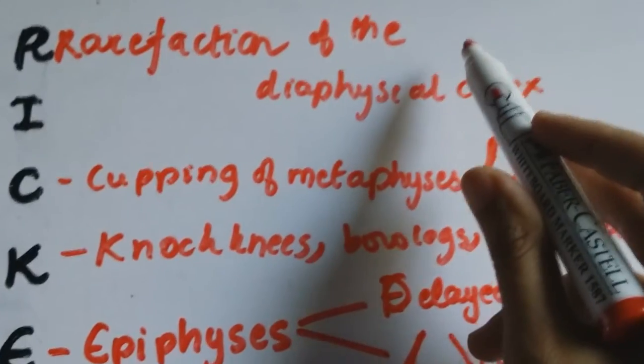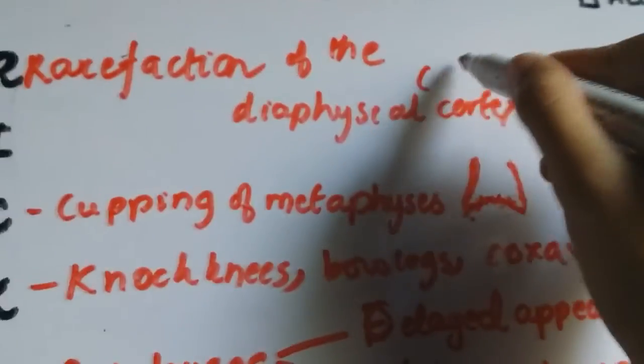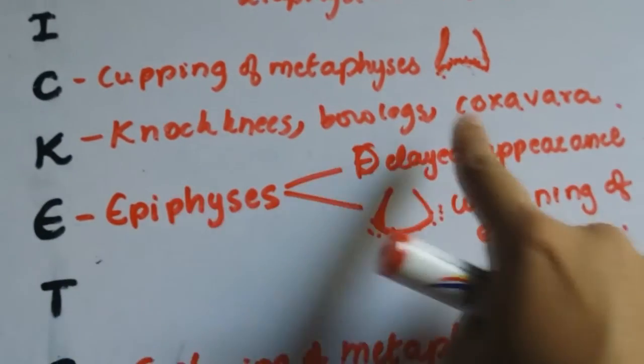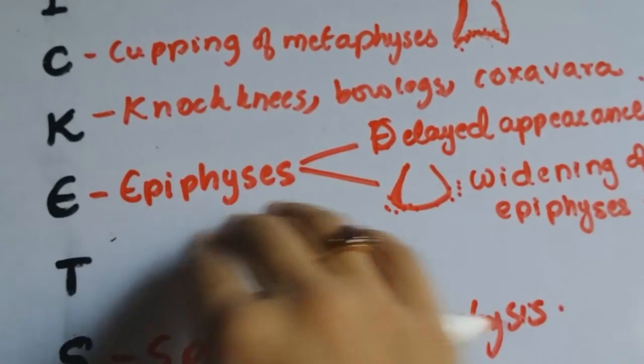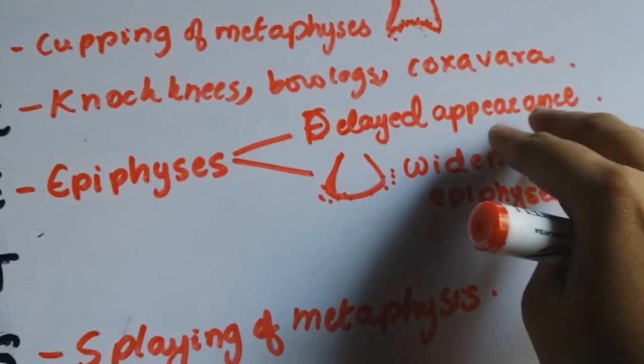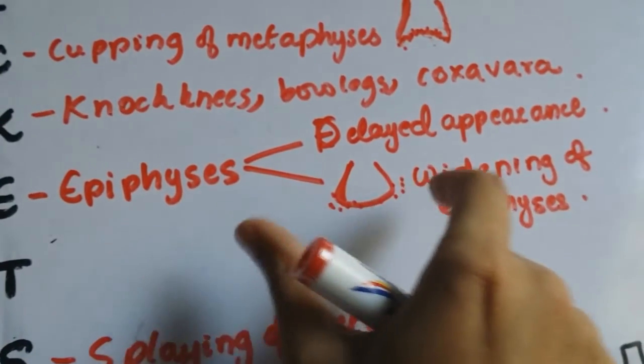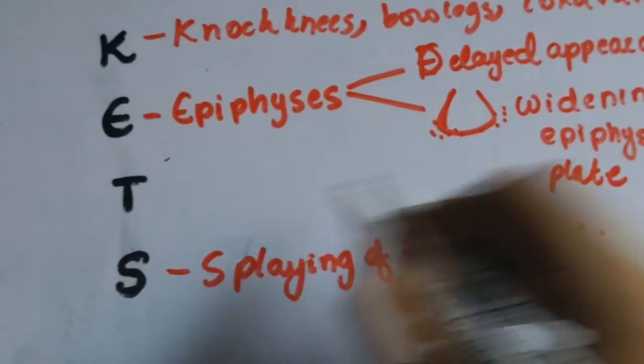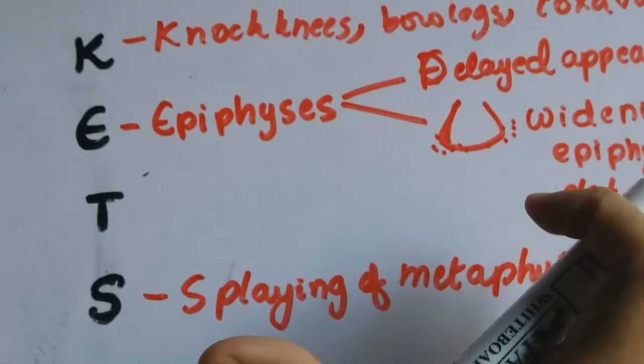So the mnemonic goes R for rarefaction of diaphyseal cortex but it occurs very late in the disease. There's nothing with I, cupping of the metaphyses, knock knees, bow legs and coxa vera. Epiphyses, there's a delayed appearance of epiphyses as well as the widening of the epiphyseal plate and S is for splaying of the metaphyses.